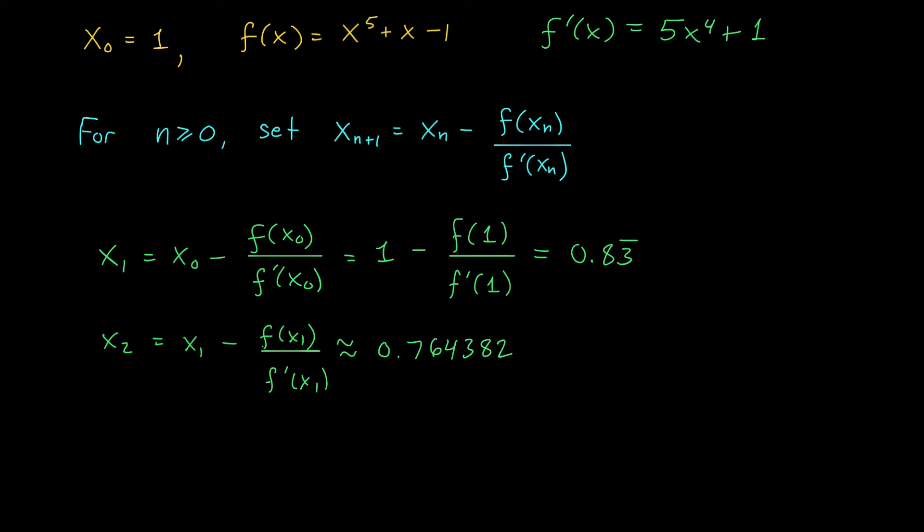And now you continue. You have to keep going until these numbers start to stabilize. Using the exact same process, we find that x3 is approximately 0.755024. Okay, we still have some changing between x2 and x3. So we should keep going. x4 is approximately equal to 0.754877.